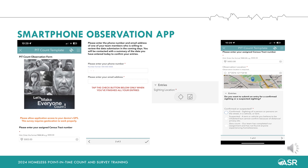When you first open the observation form, you will be prompted with a question asking for the number of the census tract you're currently working on. You will need to open a new observation form for each census tract you cover. After entering your census tract number, the app will ask you for your phone number and email address for post-count data validation purposes. Then scroll down to the observation location area and select the optical site symbol, which will pinpoint your location for your upcoming entry. You must select the optical site symbol for every entry so your location is consistently recorded. Then scroll down to the first question, which asks whether you'd like to submit a confirmed or suspected entry.